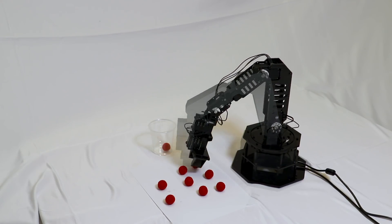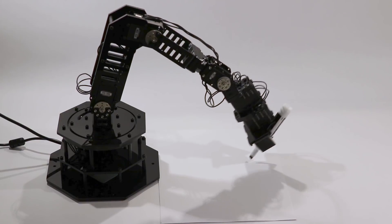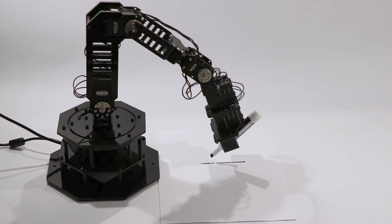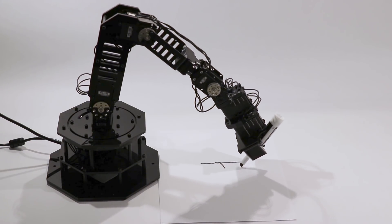The same self-model, without any additional training, could be used for other tasks. For example, here the robot is writing text using a marker.